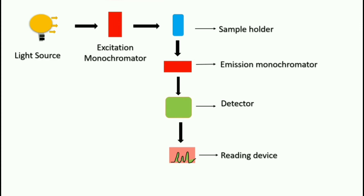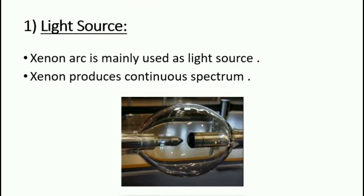Let's study the light source. Xenon arc is mainly used as the light source because xenon produces a continuous spectrum, as you can see in the diagram. The light radiations produced are in the range of 300 to 800 nm.